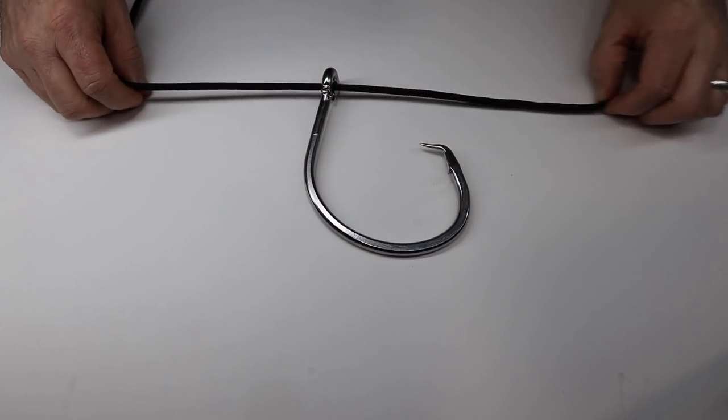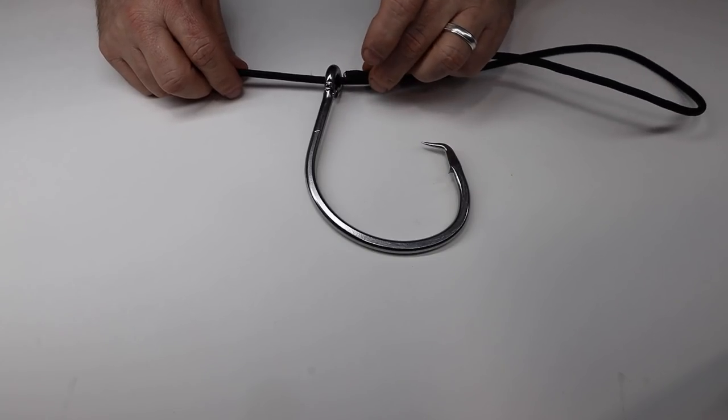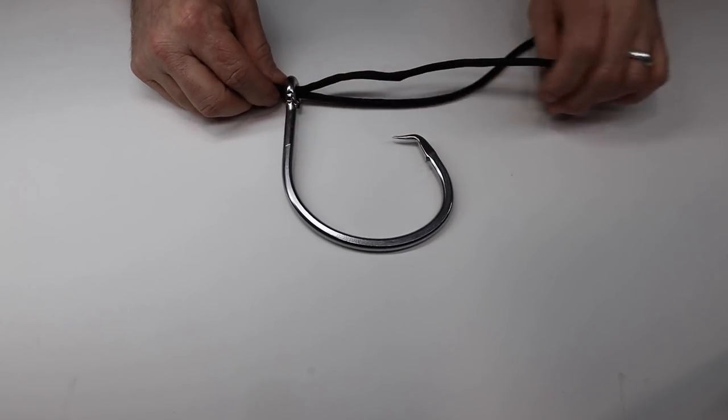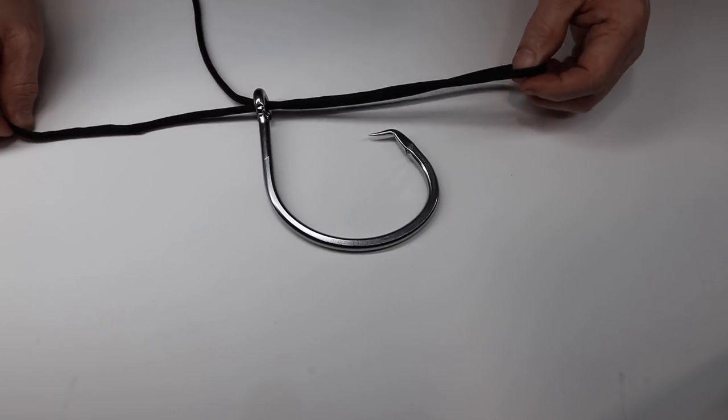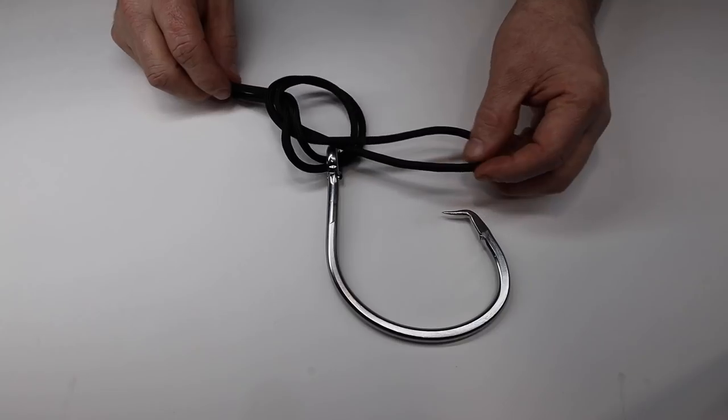But you can stick your line through the eye and then bring the end of that line back through the same way it came in and you'll have that loop. But once you get your loop made, you just tie it in a knot like you're tying your shoes.